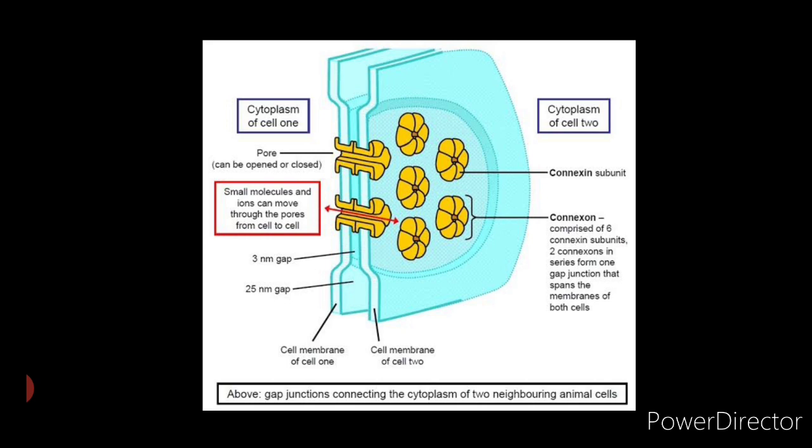A gap junction forms when the connexons of two cells align perfectly, creating an open channel spanning the plasma membrane of both cells. Gap junctions provide passageways large enough to permit small substances such as simple sugars and amino acids to pass from the cytoplasm of one cell to that of the next.